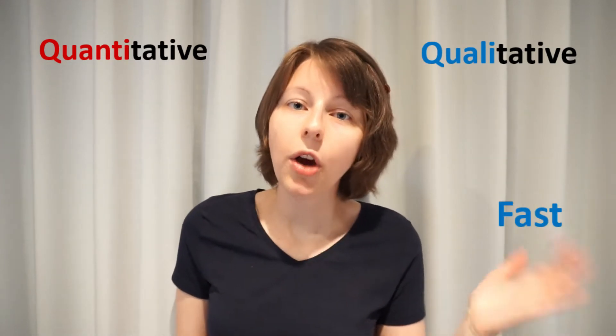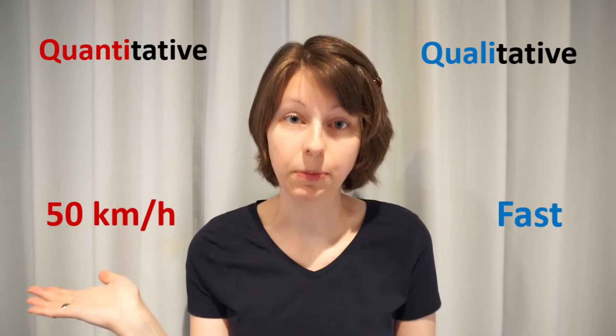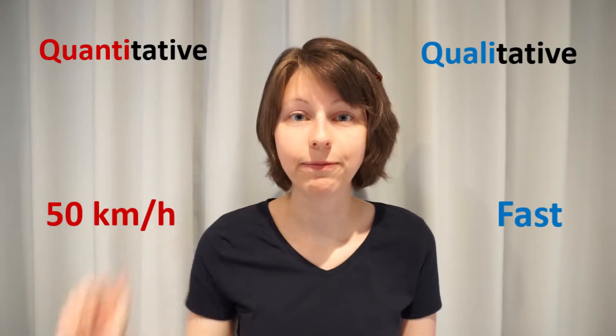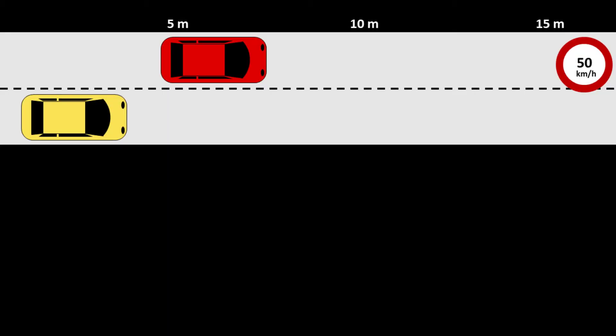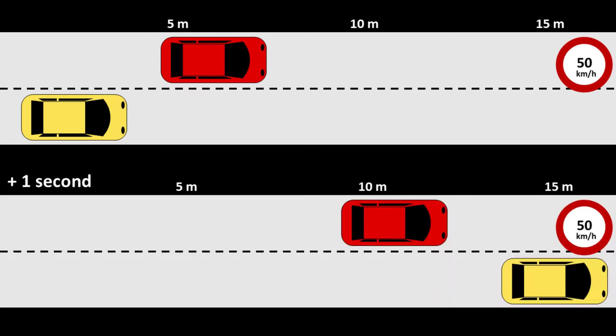If, for example, you think about a car rushing by, you might say that it's fast, or you might say that its speed is 50 kilometers per hour. Imagine that you're taking pictures of two cars to see if they are going over the speed limit. Which car do you think is faster? It's impossible to tell based on one image, right?